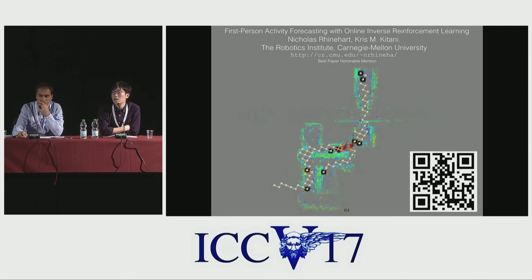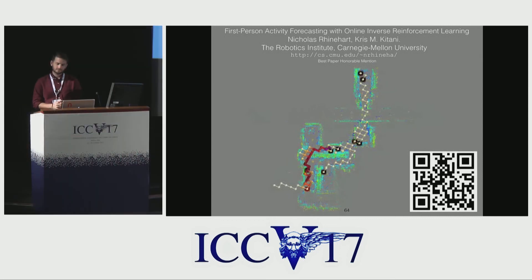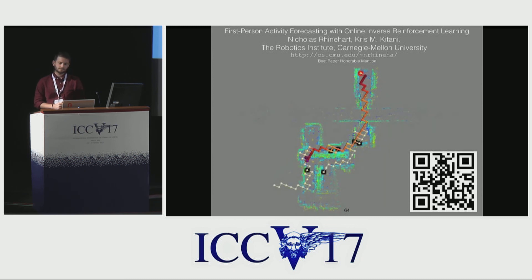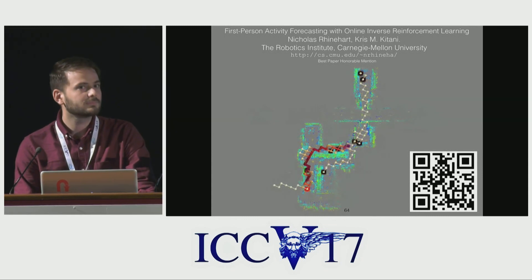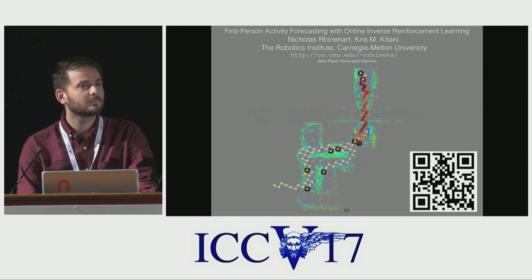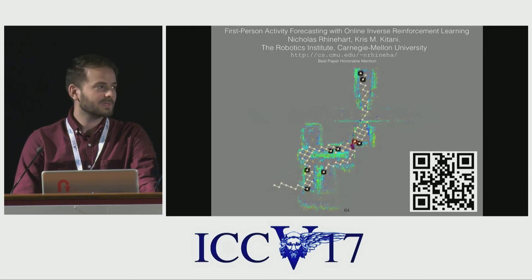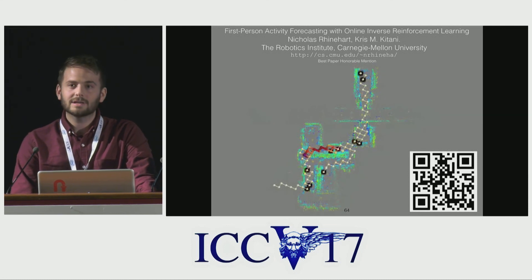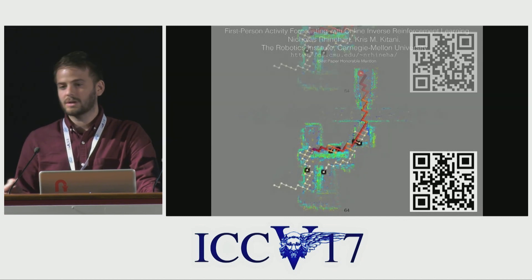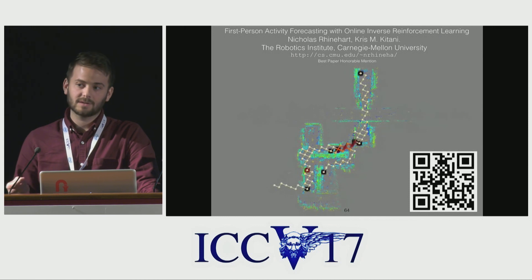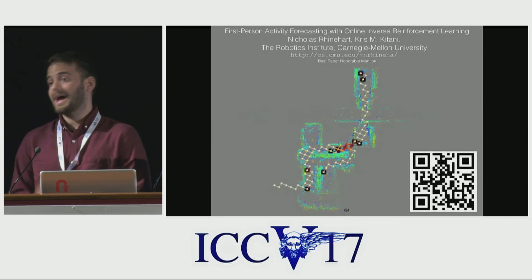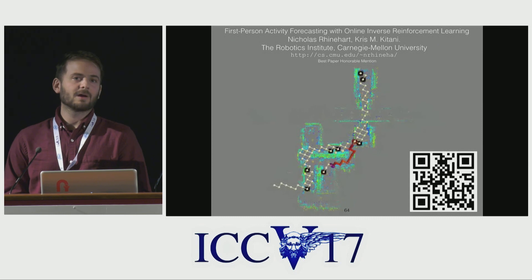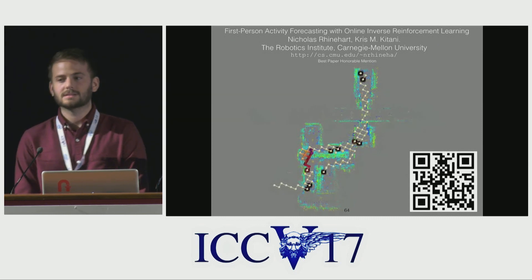Question: how would you see this scaling up to a whole city using first-person vehicle video? One of the original applications of maximum entropy inverse reinforcement learning was to predict the future destinations of taxi cab drivers — they did have a graph there at city scale. So the underlying inference will be similar and should be able to scale to that size.